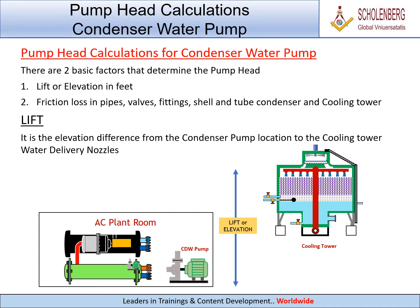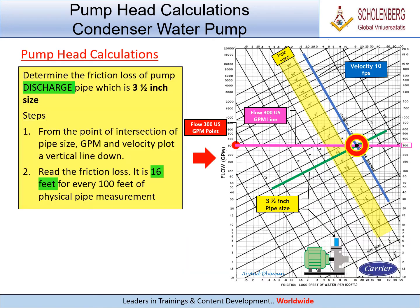Lift is the elevation difference from the condenser pump location to the cooling tower water delivery nozzles. To determine the friction loss of the pump discharge pipe (3½ inch size): 1. From the point of intersection of pipe size, GPM, and velocity, plot a vertical line down. 2. Read the friction loss — it is 16 feet for every 100 feet of physical pipe.